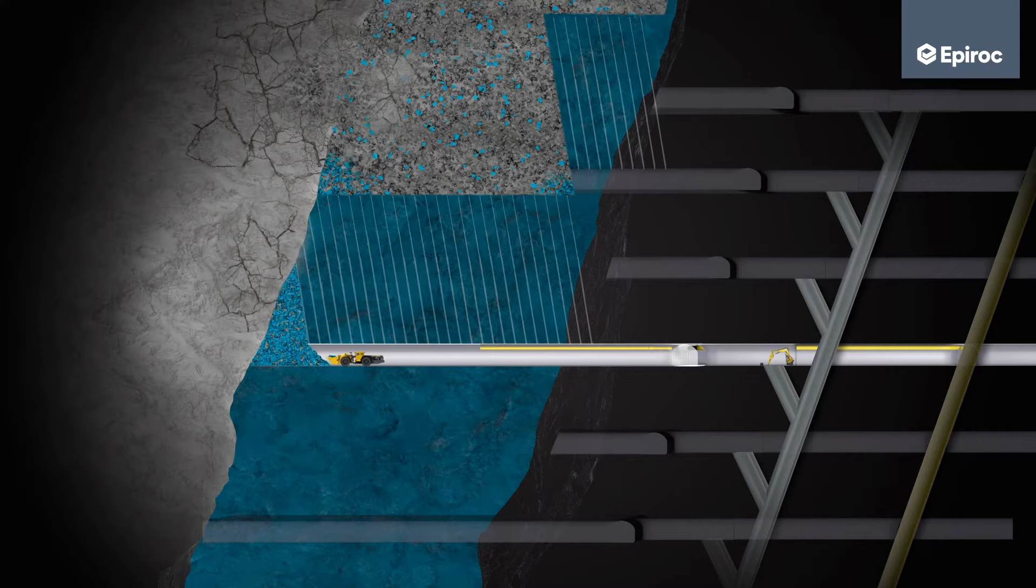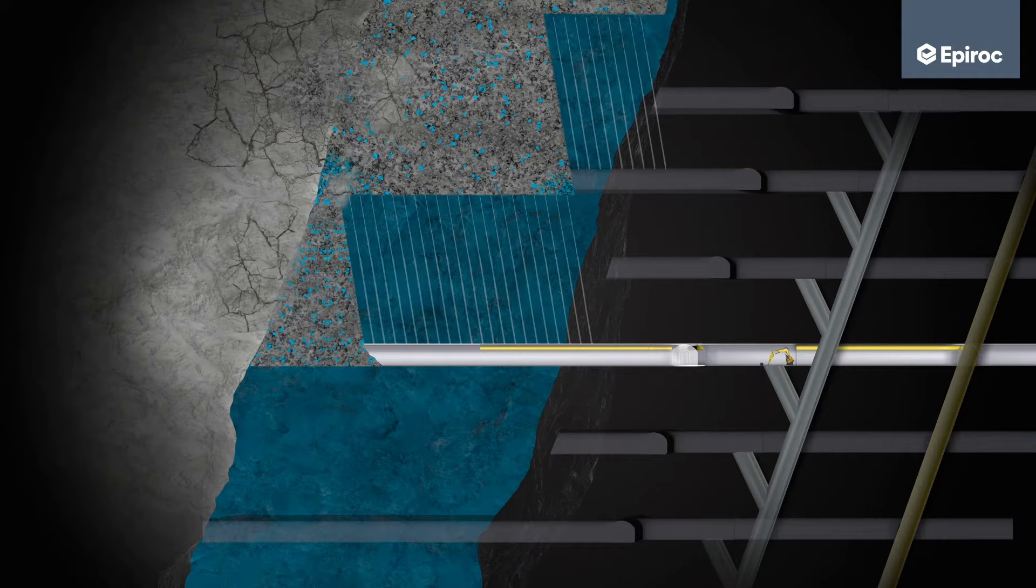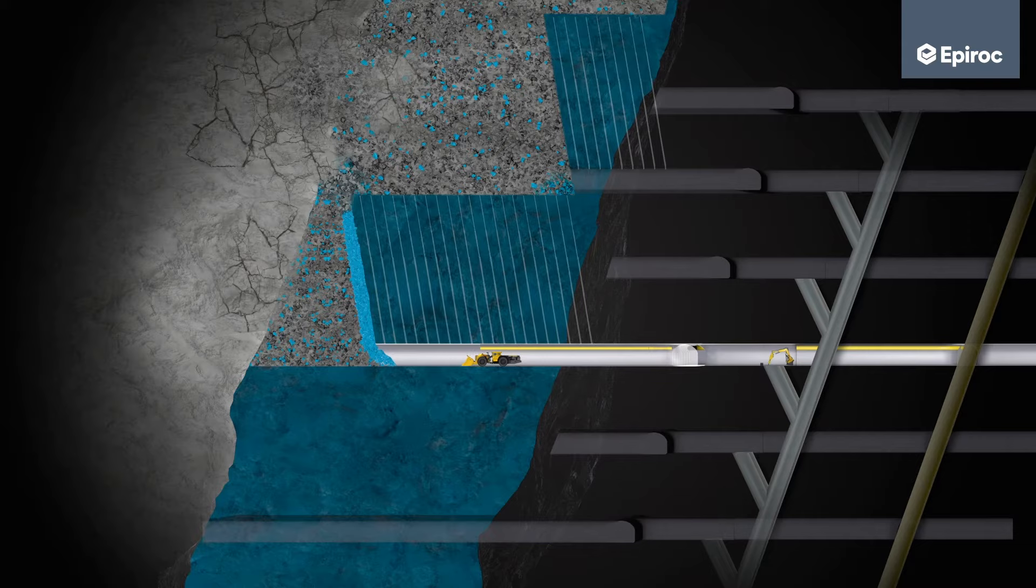Rock is loaded from the cave front after each blasted ring. In order to control dilution of waste rock in the cave, loading a predetermined extraction percentage of rock is done.